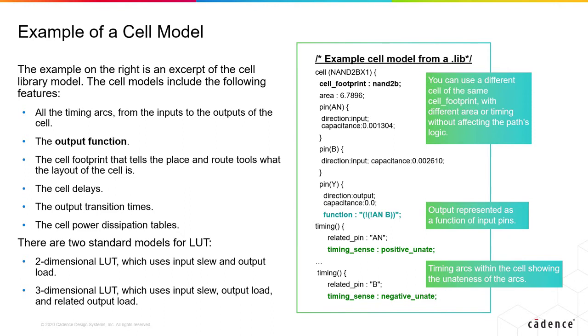There are two main models for cell delay in the Liberty libraries. The 2D cell delay lookup table uses the input slew and output load as its input variables to look up the values of the delays. The 3D cell delay lookup table uses the input slew, the output load, and also the related output load. If there are multiple outputs, for example Y and Y bar, then to calculate the delay to Y, you use the output load as seen on pin Y and the related output load as seen on Y bar and vice versa for Y bar.